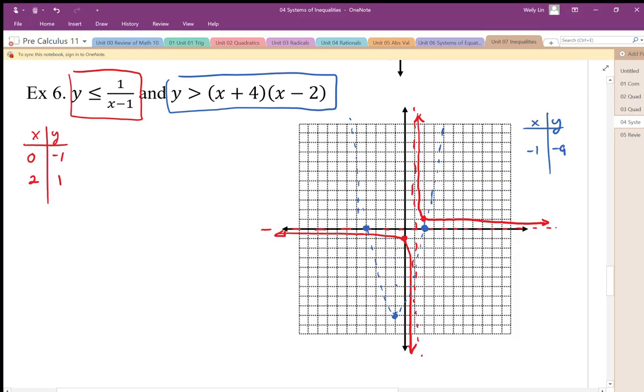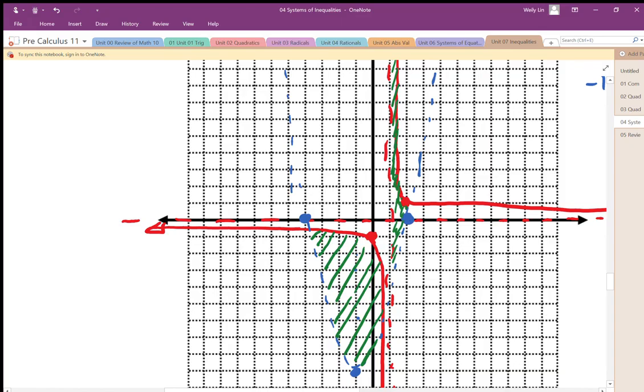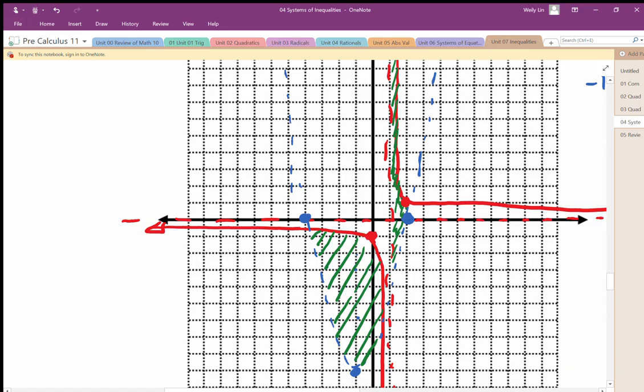We need to make sure that the solution is going to be below the rational function and above the parabola. Where are the areas that are below the rational function and above the parabola? That's going to be this region in here, below the rational function and above the parabola. This area in here, all the way from infinity, is going to be the same. This area in here is above the parabola and below the asymptote. Since there's a boundary line right along here, we can't go past that boundary line. Although that's below the rational function, it's no longer above the parabola.